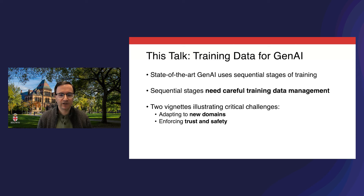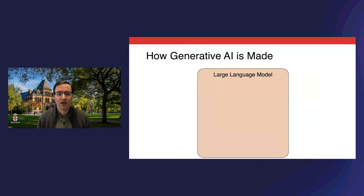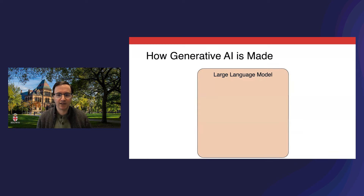I'm going to illustrate this with two short vignettes on research recently done in our lab at Brown on critical challenges related to that training data. The first is adapting generative AI to new domains, and the second is enforcing trust and safety in the content it produces. To get there, I'll overview how state-of-the-art generative AI is made, focusing specifically on large language models — LLMs for short. The first thing to know about training LLMs is that it's not one monolithic process; it's a whole stack of training processes.